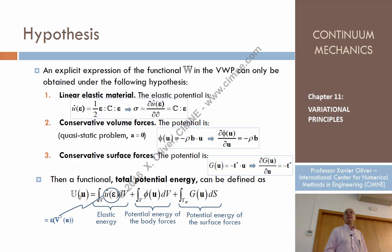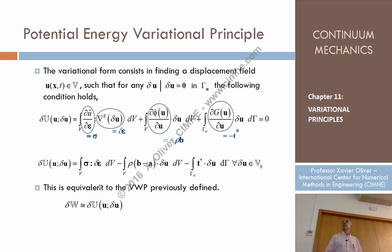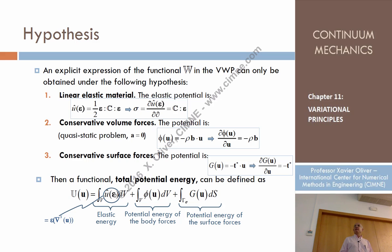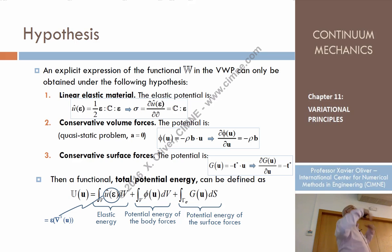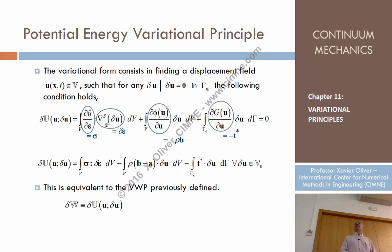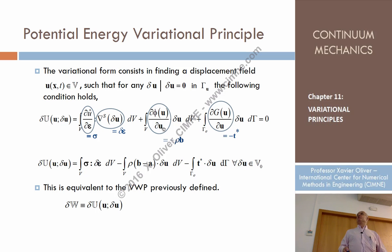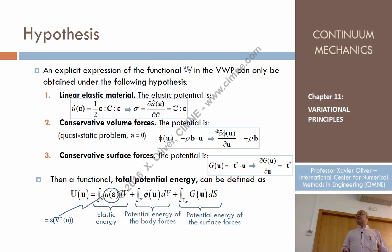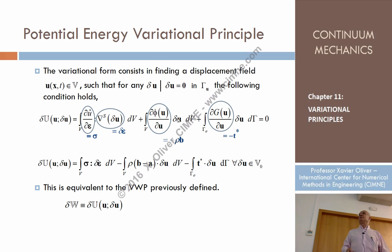To find the Gâteaux derivative, I differentiate this with respect to epsilon and multiply — using the simplified version of taking the Gâteaux derivative, like differentiating. I differentiate U with respect to epsilon, which provides the stresses, times the differential of epsilon — but this differential is the virtual strains, which is the symmetric gradient of delta U. Plus the derivative of phi with respect to U times delta U, which is minus rho B times delta U. Plus the derivative of G with respect to U times delta U, which is minus T — so minus T times delta U.